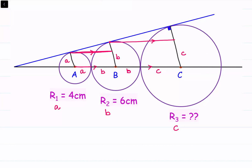Each angle between the radius and the tangent is 90 degrees. Since all three radii are perpendicular to the tangent, and the tangent acts as a transversal, the corresponding angles are equal — meaning all the radii are parallel to each other. Looking at the resulting quadrilateral, opposite sides are parallel, so it is a parallelogram. In a parallelogram, opposite sides are equal. Therefore this particular length equals a, and the length on top is b minus a.